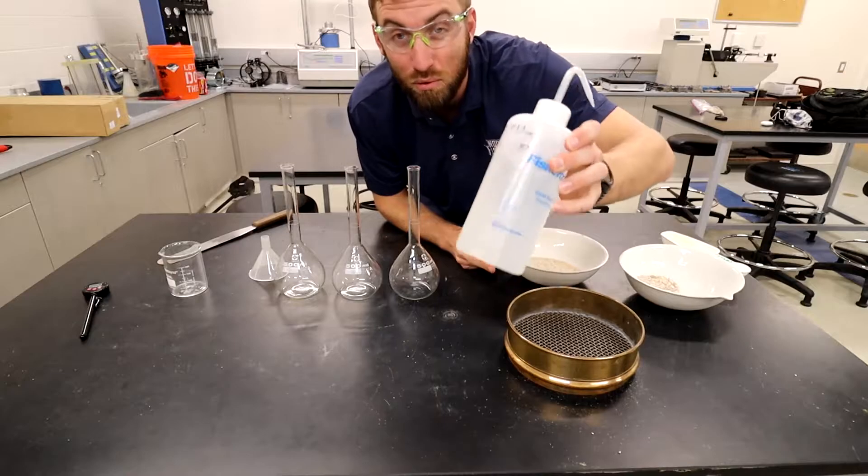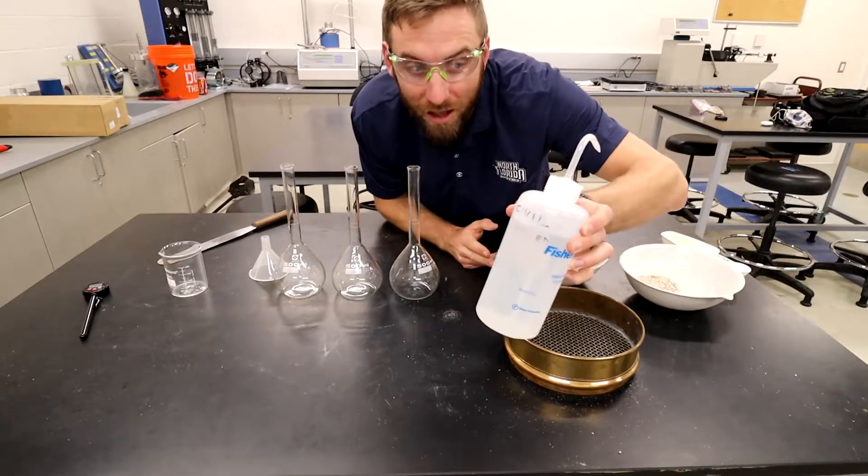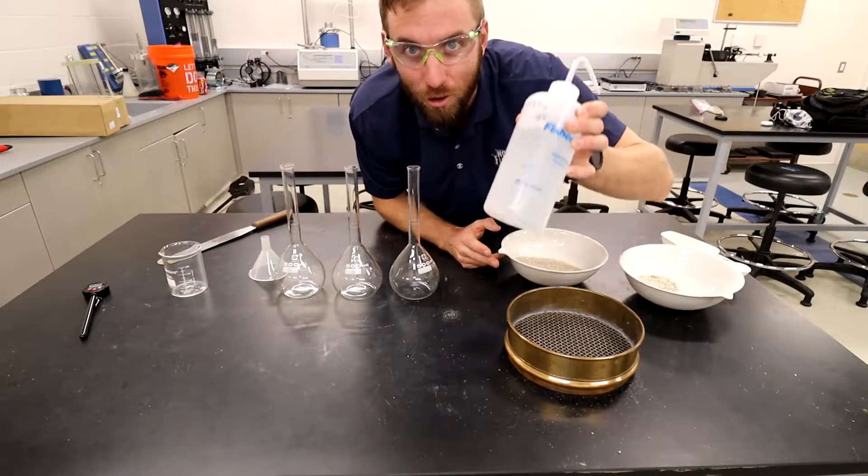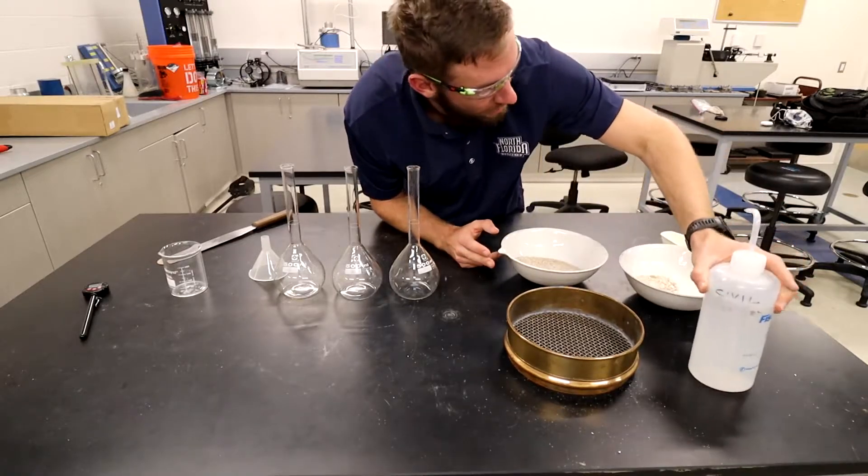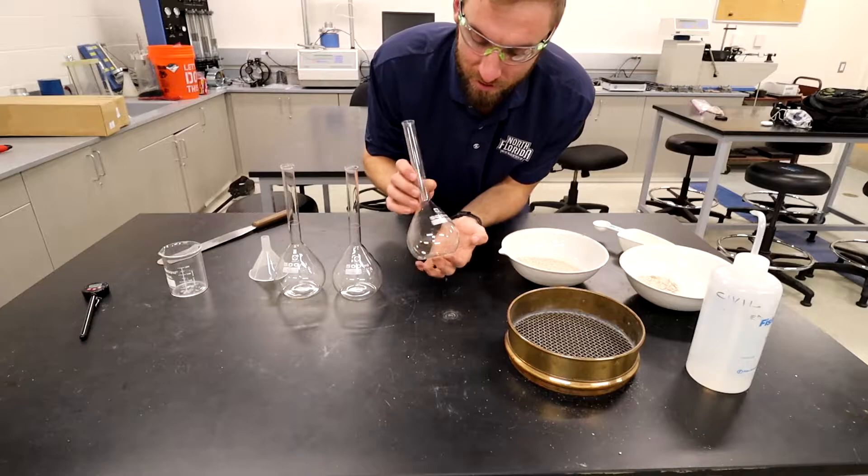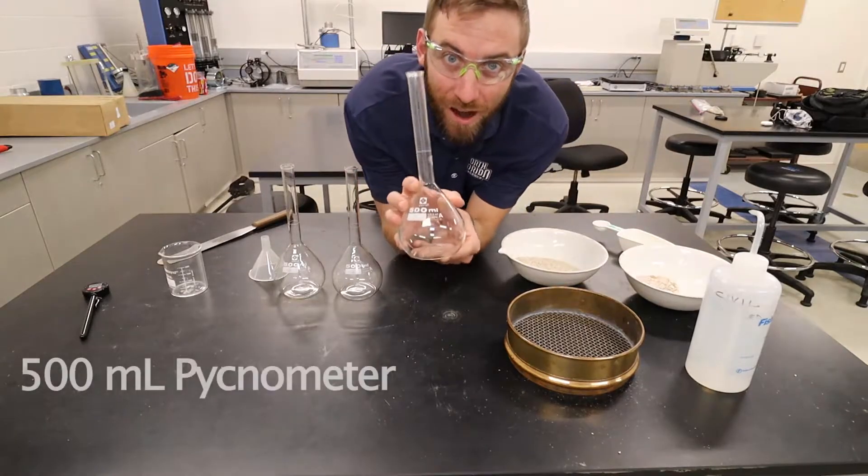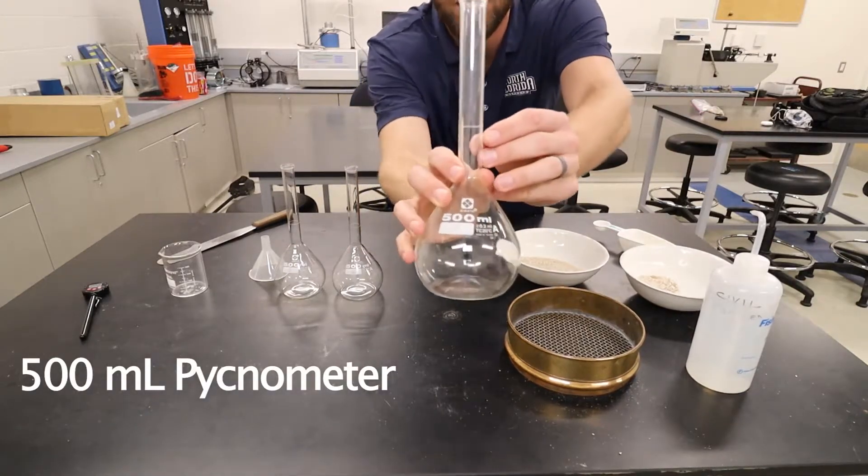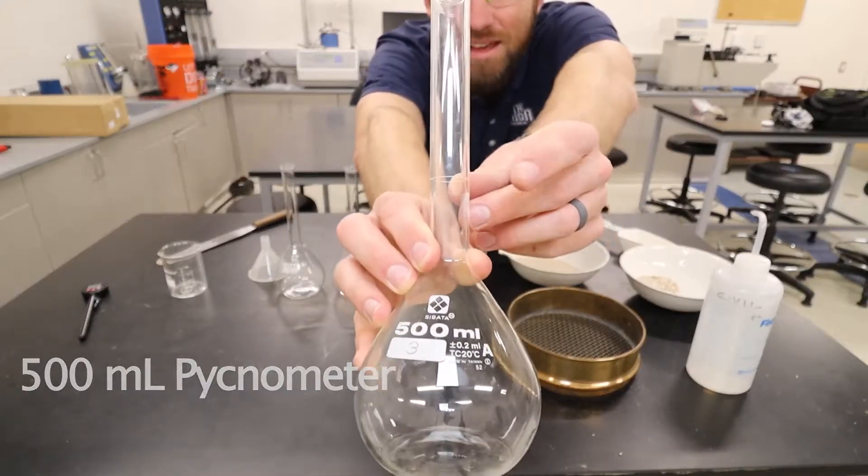We need water, preferably distilled water. We don't have distilled water, so we're using tap water. That could be a source of error. Going to need a little scoop to scoop our soil into our pycnometers. Again, this is a pycnometer. It's 500 milliliters if filled exactly to the top there.